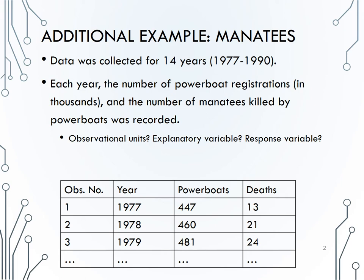The observational units here would be years, because that's what I'm collecting data from. The explanatory variable would be the number of powerboat registrations, and the number of powerboat registrations is supposed to be predicting the response or number of manatees killed by powerboats. You see the first three rows of the data in the table below.